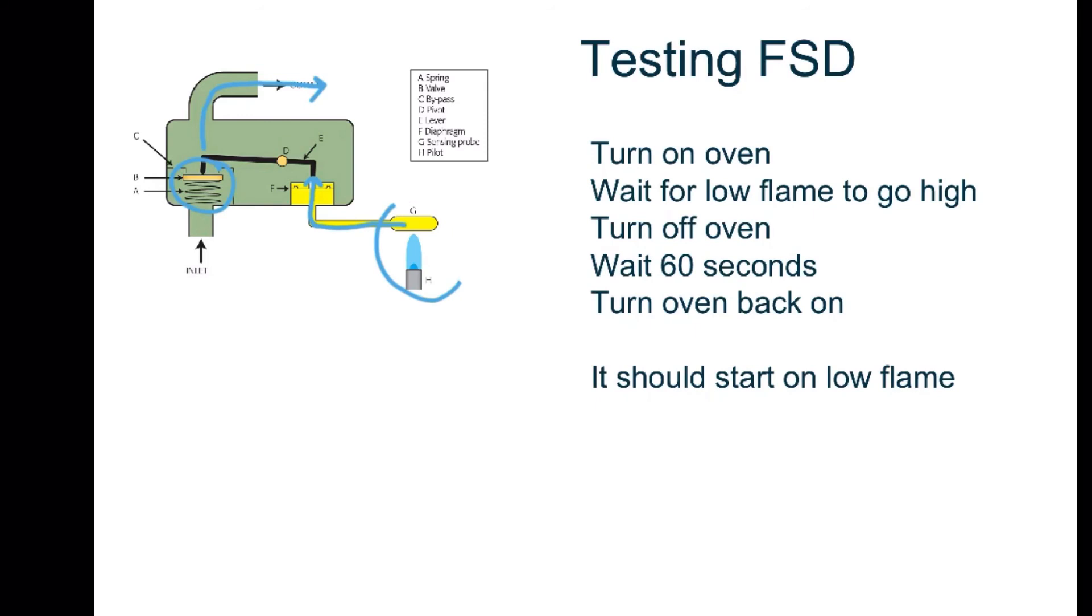By turning the oven off, the file has had the flame removed. It cools down, the liquid retracts, the spring pushes up and closes the valve. All that happens within 60 seconds if the FSD is working correctly.